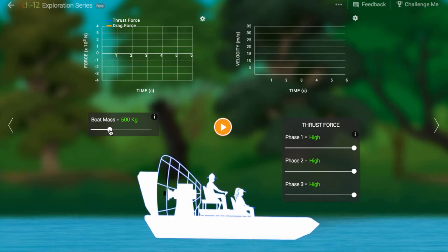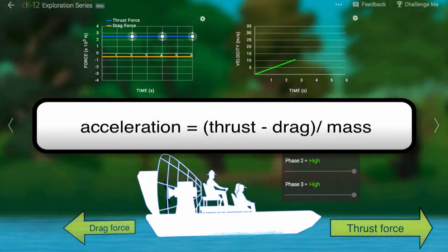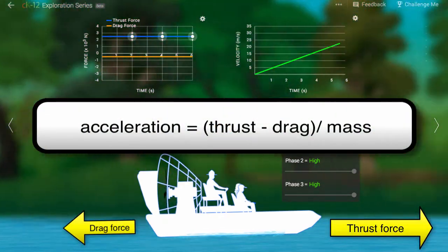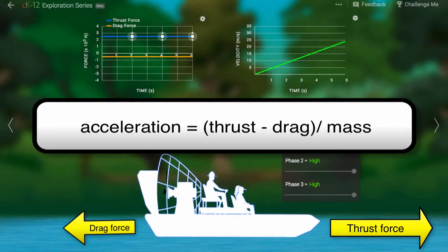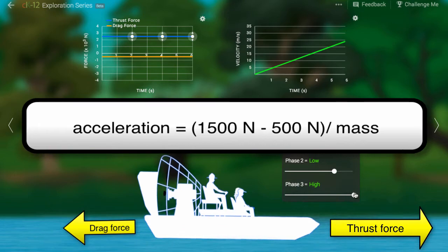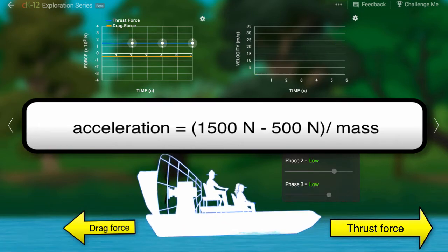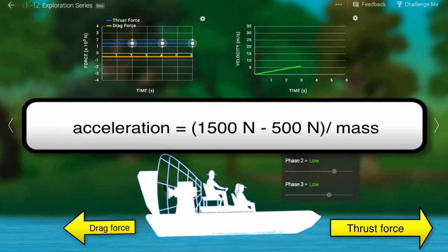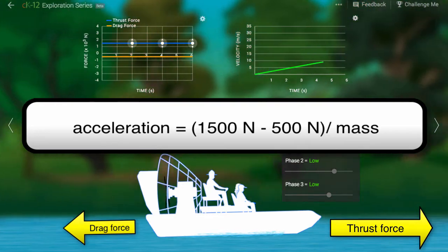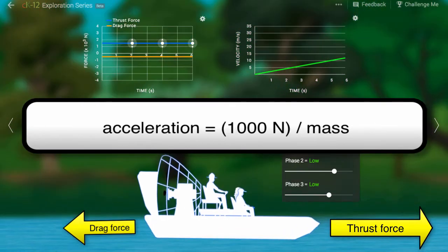The net force acting on the boat is the amount by which the rightward force exceeds the leftward force. For example, when the thrust force is 1500 newtons and the drag force is 500 newtons, the net force is 1000 newtons rightward.